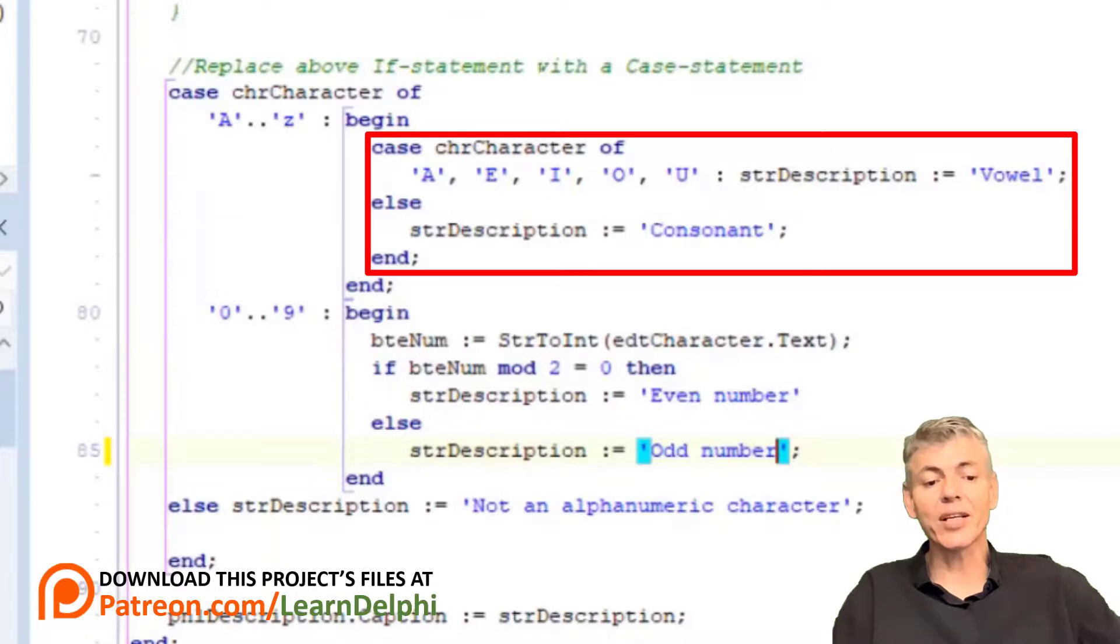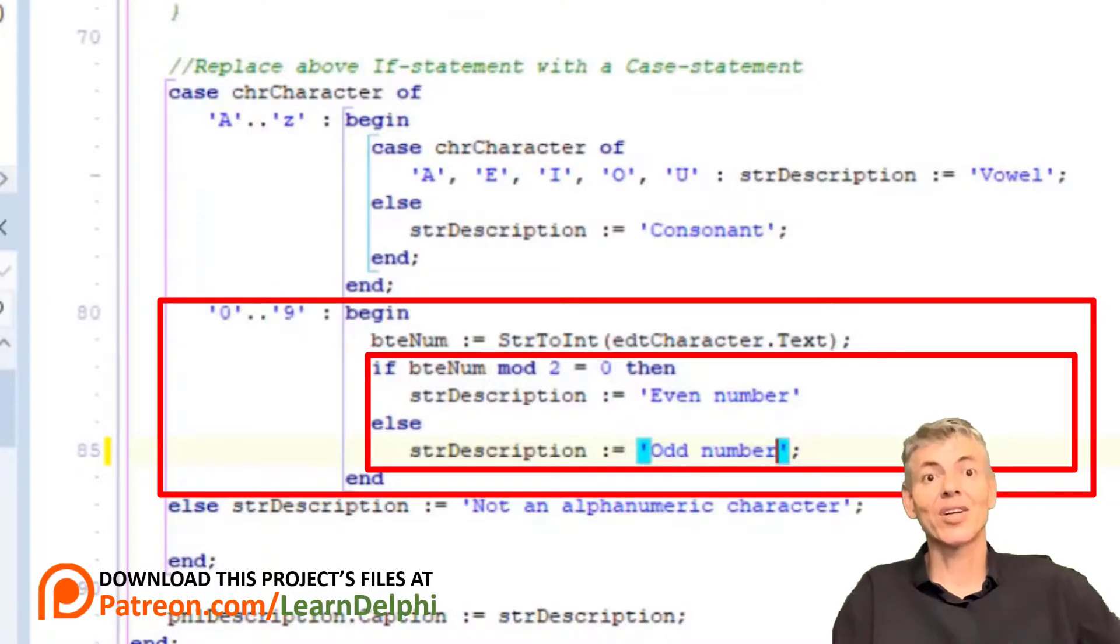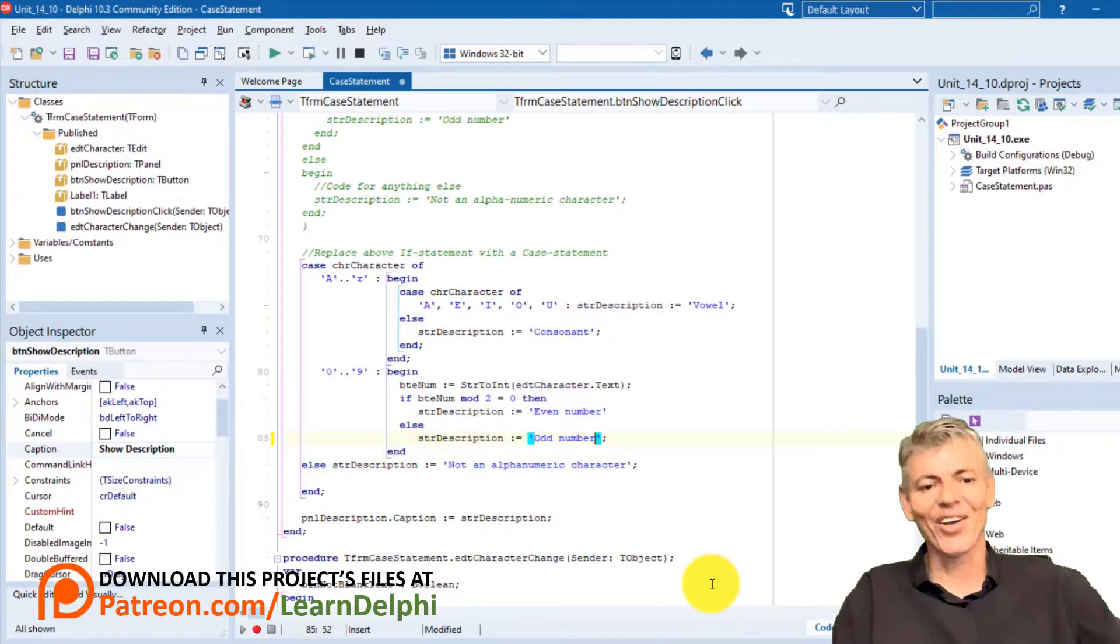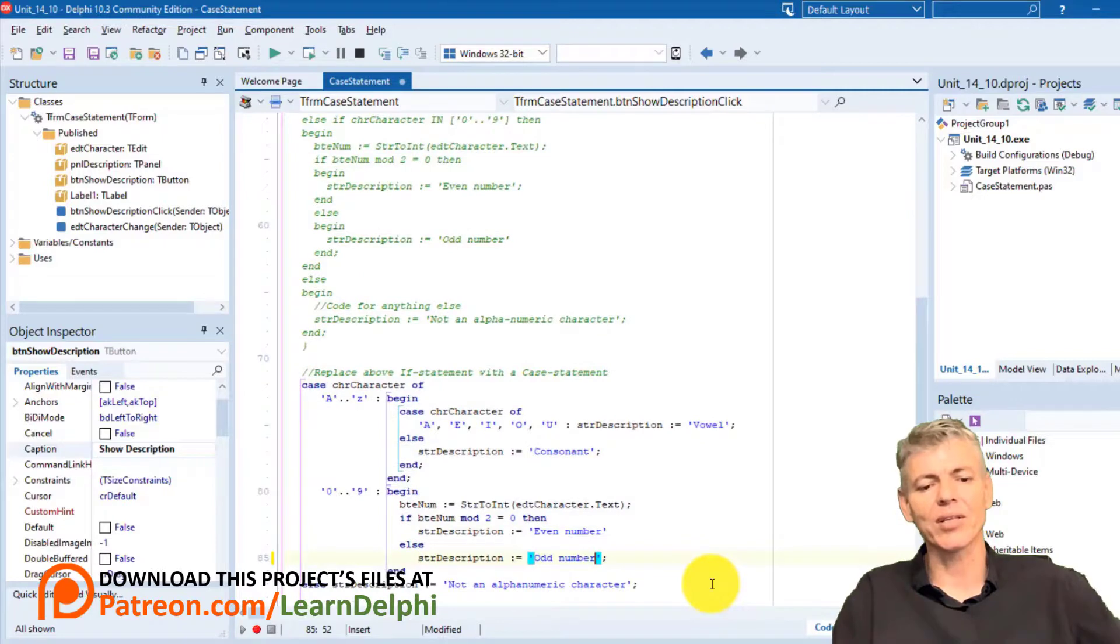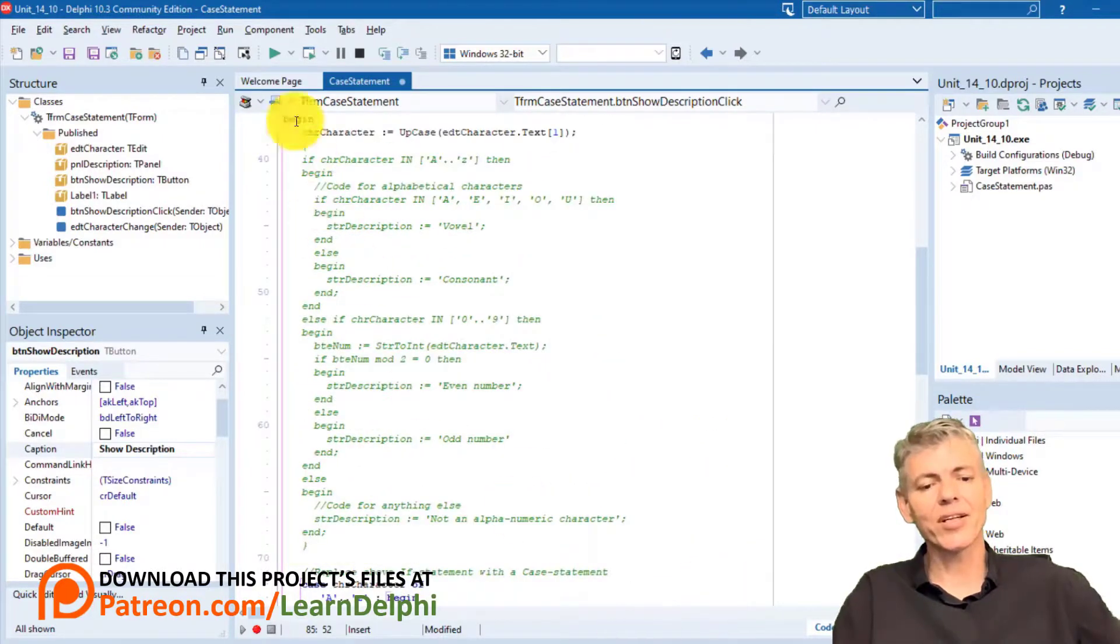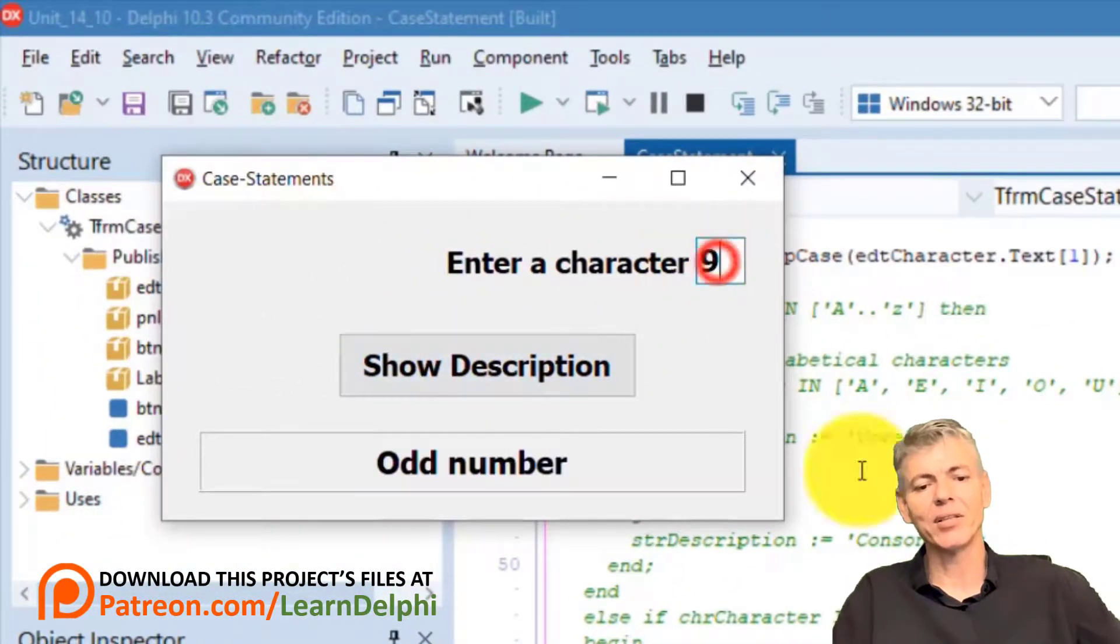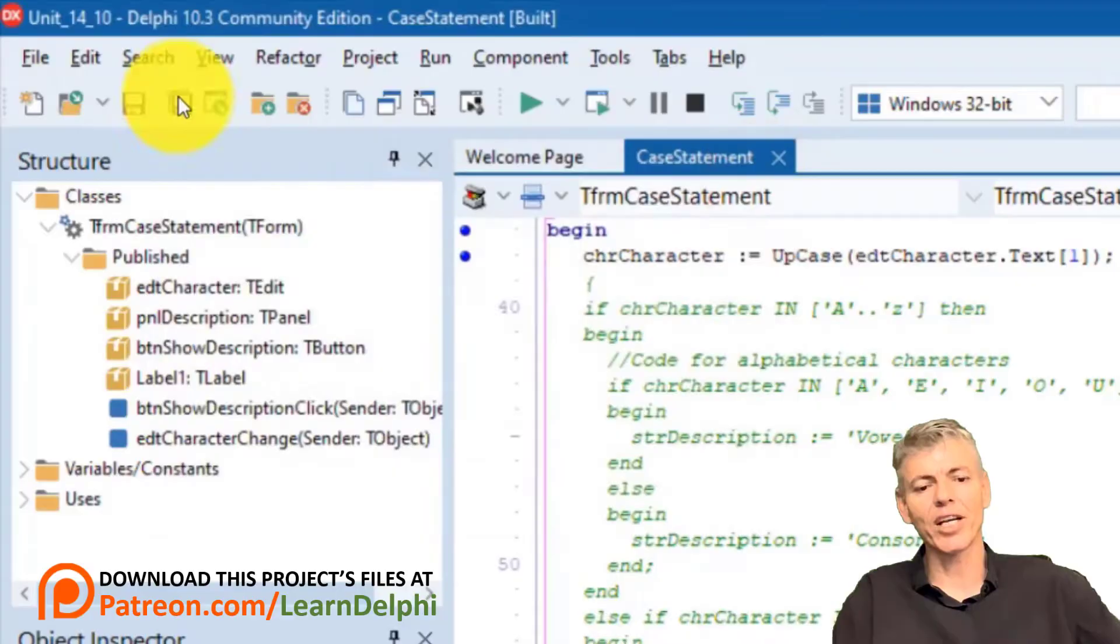Also notice how we nest this case in an outer case here. And also notice how we nest an if statement in a case here. So Delphi gives us a lot of flexibility when it comes to making multiple decisions. Now you can scroll up to the previous code and compare the case statement with the if statement we wrote last time. Let's test it now. Run the program. Test your application with an odd number, and with an even number. Also test it with an exclamation, and with a vowel, and a consonant. If you are happy, close the form and save your work.